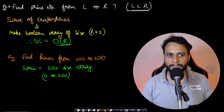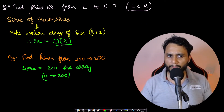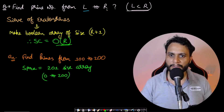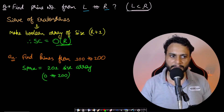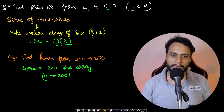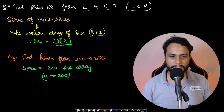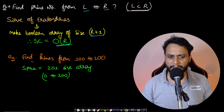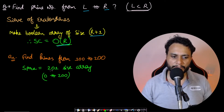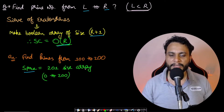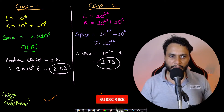Now let's understand the problem statement. We are given to find the prime numbers in the range of L to R, where L is less than R. If you follow the sieve of Eratosthenes method, you need to make a boolean array of size R plus 1, which is from 0 to R. Therefore the space complexity will be O(R) and the time complexity will be O(R log log R). For example, finding the primes from 100 to 200 requires a boolean array of size 201.